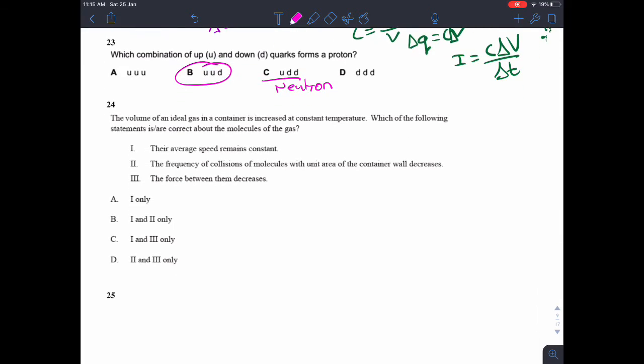Question 24. The volume of an ideal gas in container is increased at constant temperature. Which of the following statements is correct about the molecules of the gas? Constant temperature means constant average speed. Remember temperature is a representation of the average speed of the molecules. So that one is correct. The frequency of collisions with the unit area of the container walls decreases. That's basically saying that the pressure is decreasing. If the volume is increased at constant temperature, the pressure will decrease. So that's right. The force between them decreases. Well, in an ideal gas, we assume that there is negligible force between them. So that one's wrong. So one and two only, B.